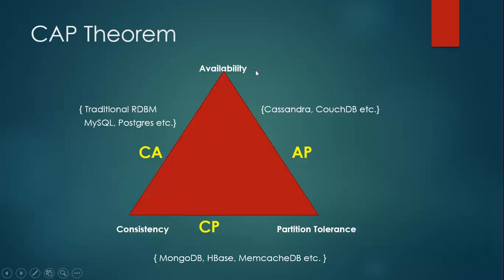A distributed system means a collection of interconnected nodes that share data. As you see the CAP theorem diagram, these three play a very important role: consistency, availability, and partition tolerance. As per the CAP theorem definition, you can choose only two among these three — you can choose availability and consistency, or availability and partition tolerance, or consistency and partition tolerance.